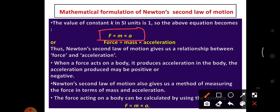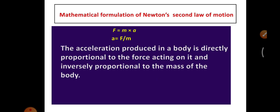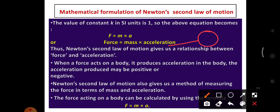Newton's Second Law of Motion gives us the relationship between force and acceleration. When a force acts on a body, it produces an acceleration. The acceleration produced may be positive or negative — if the object moves forward, the acceleration is positive; if the object moves backward, the acceleration is negative.